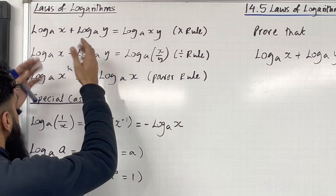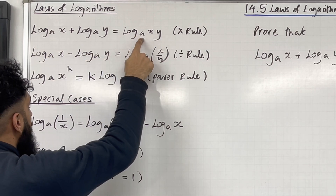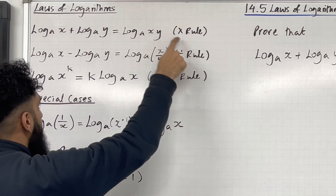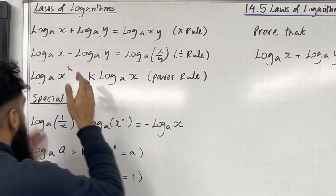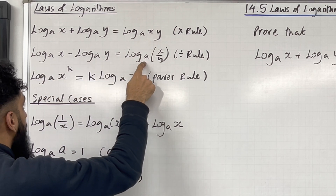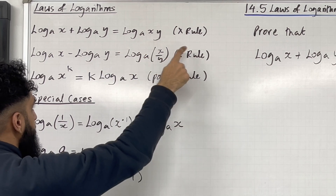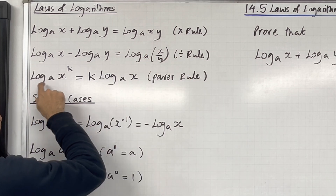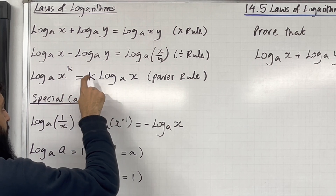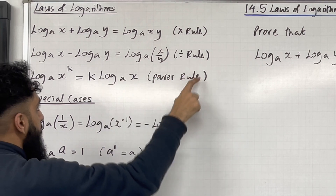If we're adding two logarithms with the same base A, we can write it as a single logarithm to the base A of x multiplied by y, which is xy. This is called the multiplication rule. If we are subtracting two logarithms with the same base A, we can write it as a single logarithm to the base A of x divided by y, which is x over y. This is called the division rule. If we have log base A of x to the power k, we can bring down the power in front of the logarithm, so we have k log base A of x. This is called the power rule.